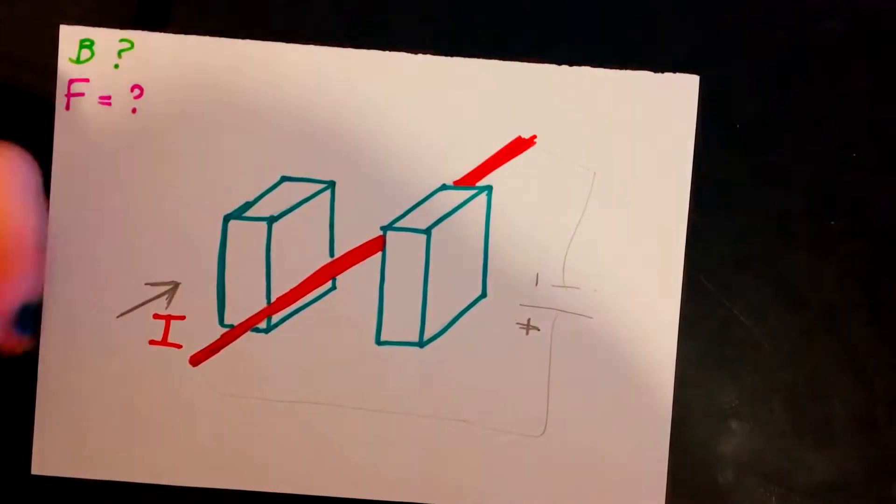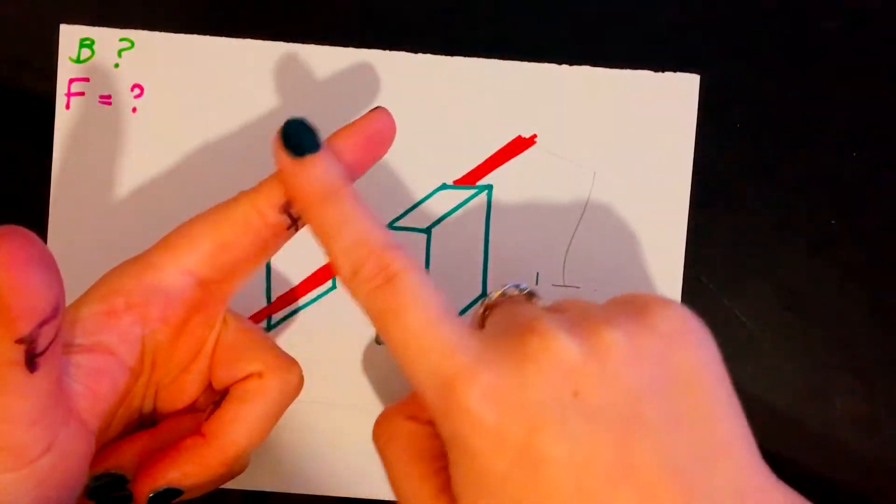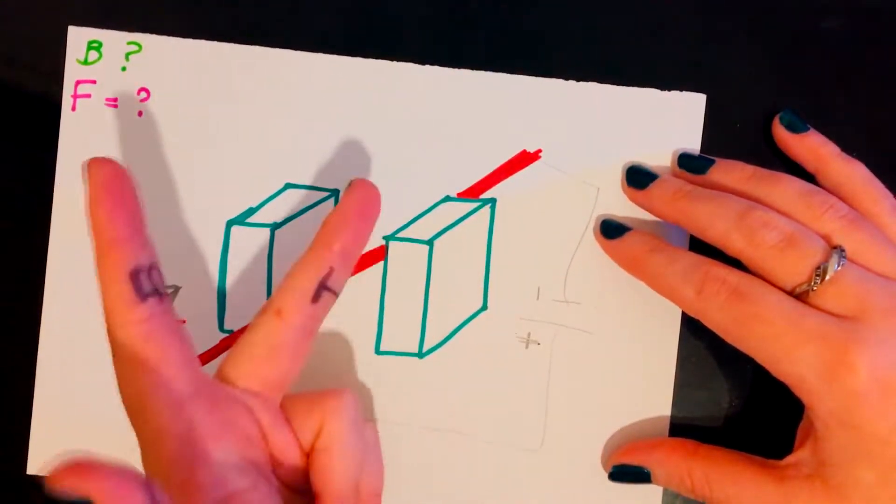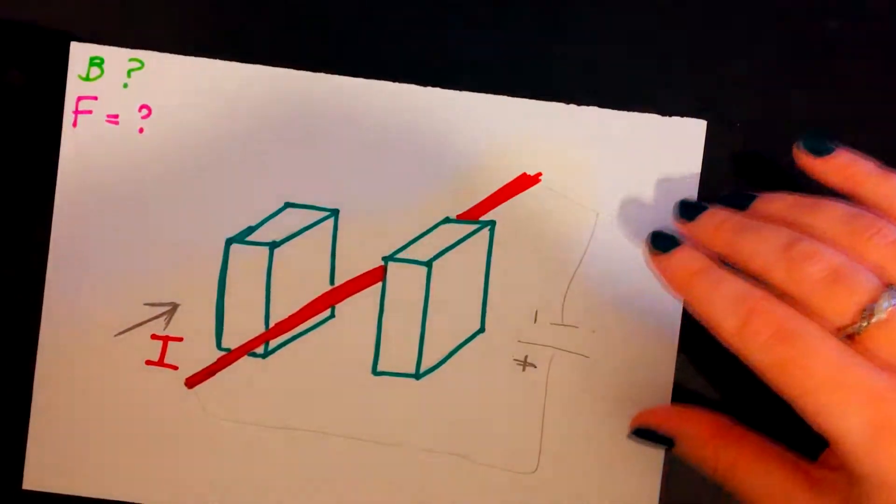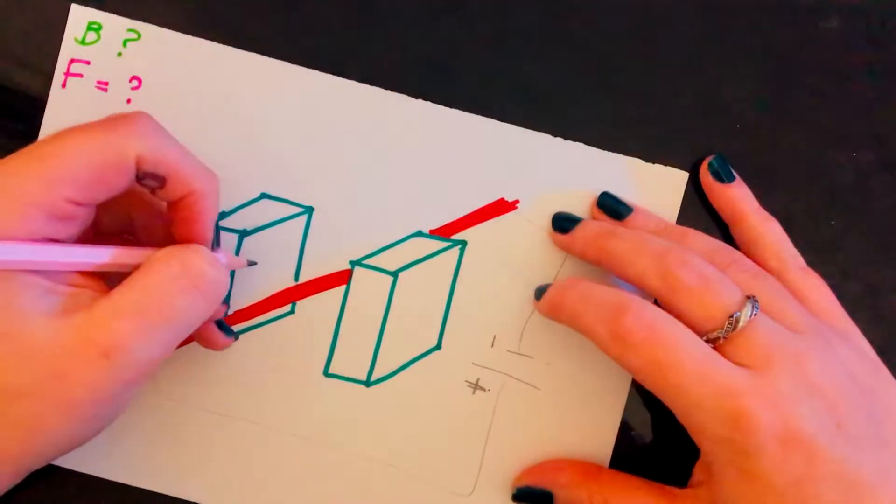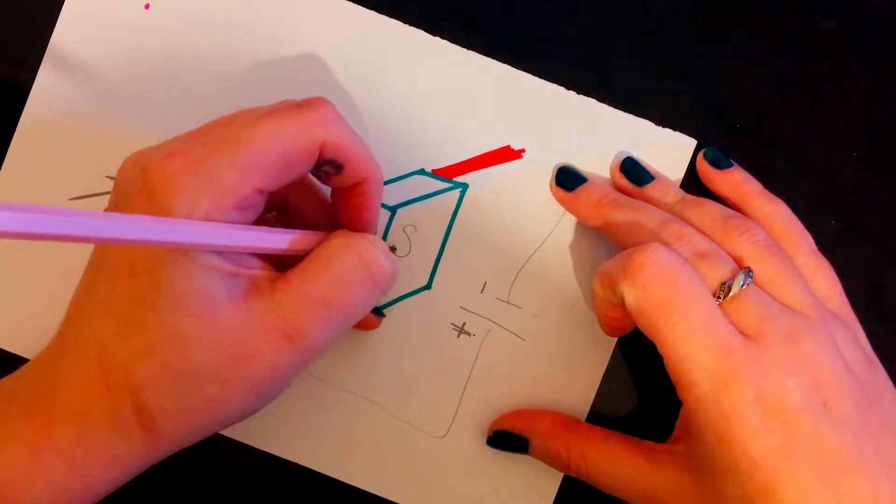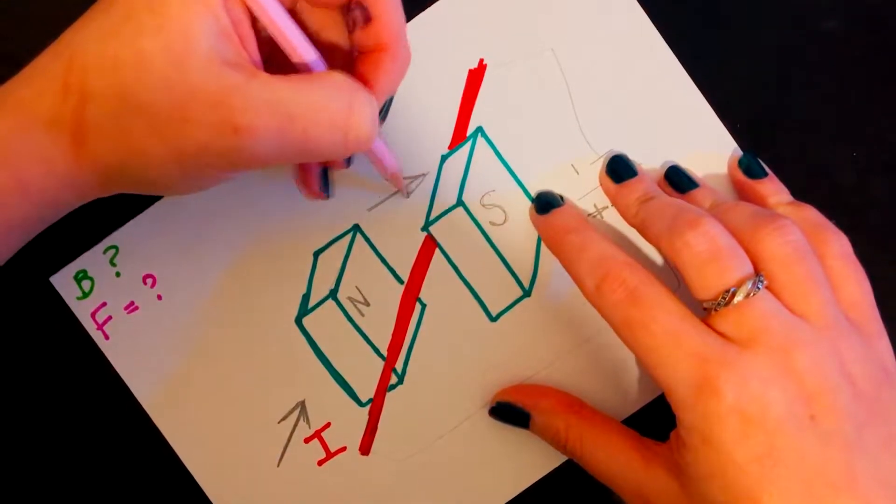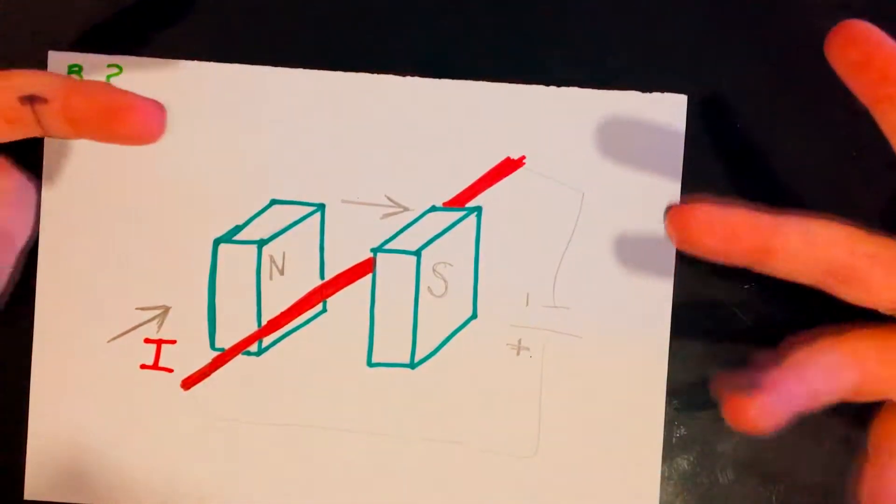First, your thumb is your force, first finger is field, second finger is your current. I know currently it's either going to be like that or it's going to be like that. When you're doing this, you're going to need two of these factors. Let's imagine I was to say that I knew that this magnet was north and this magnet was south, so our field always goes from north to south. Now I have two factors, brilliant, I can work out the question.